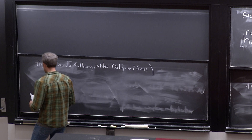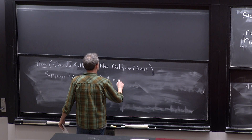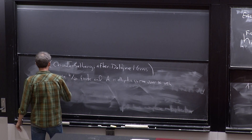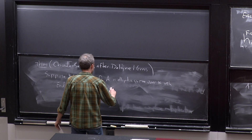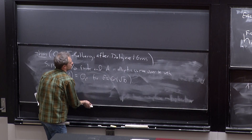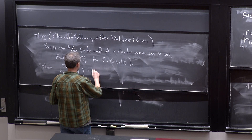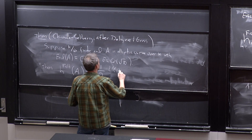Here's Chowla-Selberg, after Deligne and Gross. Suppose we take a finite extension of Q, and A is an elliptic curve over K whose endomorphism ring is the full ring of integers of some imaginary quadratic field. Then the Faltings height is basically the same as the right-hand side of the previous version: the logarithmic derivative of this Dirichlet L-function at zero, plus a fudge factor of minus one quarter times log(4 pi² times the discriminant D).